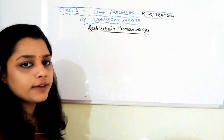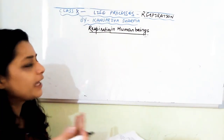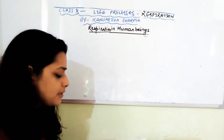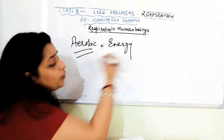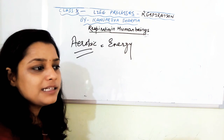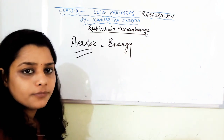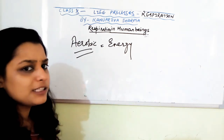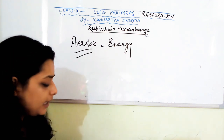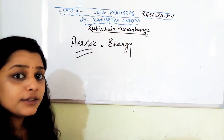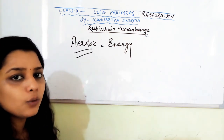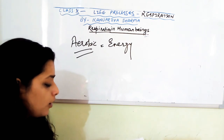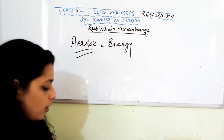Students, the next topic is exchange of gases. When we talk about aerobic respiration, it is the major source of energy. In yeast and muscles, anaerobic respiration takes place rarely, but generally in organisms aerobic respiration takes place because we are surrounded by oxygen. For aerobic respiration, we need a continuous supply of oxygen and we also exhale carbon dioxide, which is unwanted gas from our body. Different organisms have different ways of taking in oxygen.